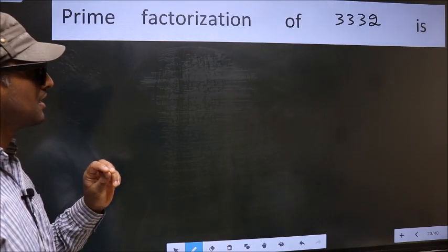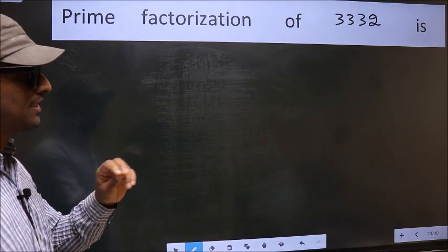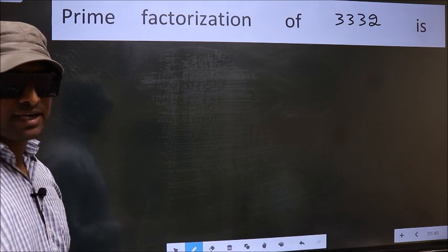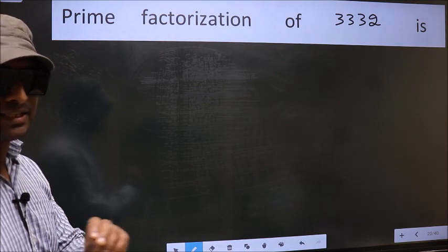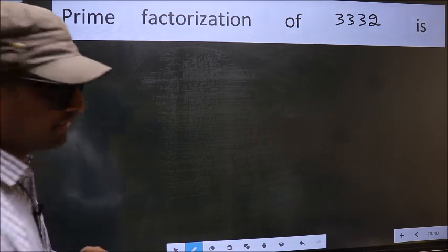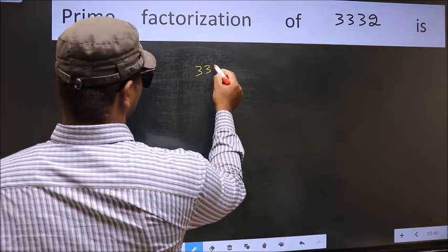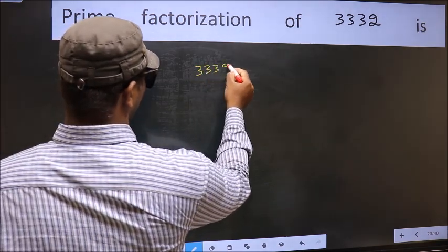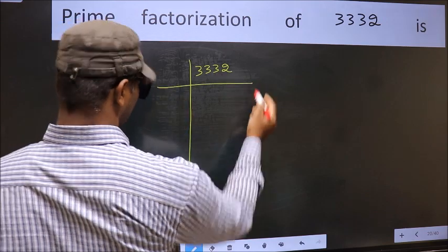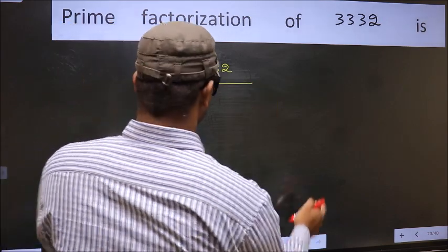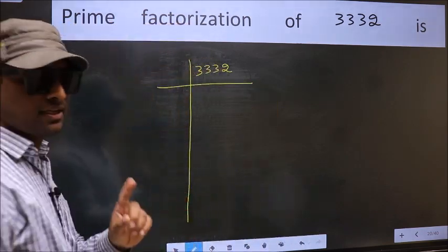Prime factorization of 3332. To do prime factorization, first we should frame it in this way: 3332. This is your step 1.